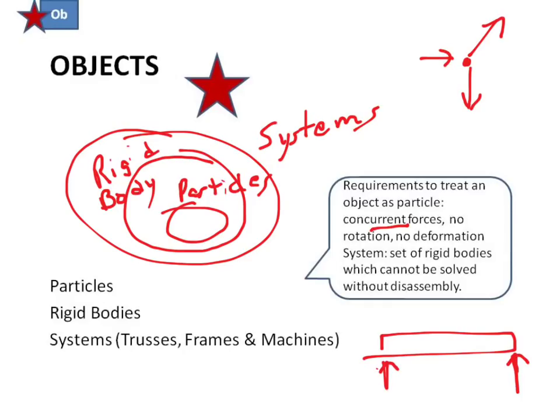The big question about a system is, can you solve your problem without disassembling it? So, when you come to count your forces, how many unknowns do you have? How many equations do you have? If you cannot solve, then you have to do some disassembly. Then you have a system.